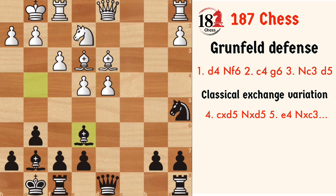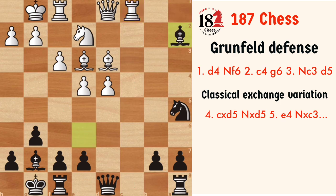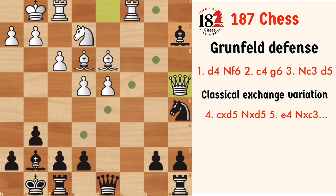Let's take Rc1. The a2 pawn is sacrificed and we will accept it. The best move is to play Qa4, attacking the bishop, and the bishop drops to e6. And now d5 — since the rook is no longer on a1, d5 is possible, and after Bd7, Qb4.